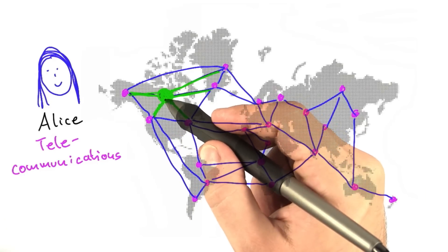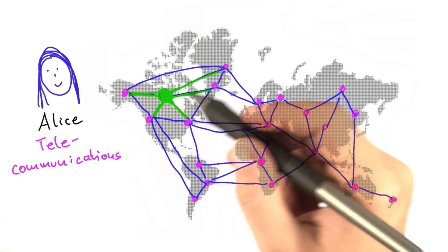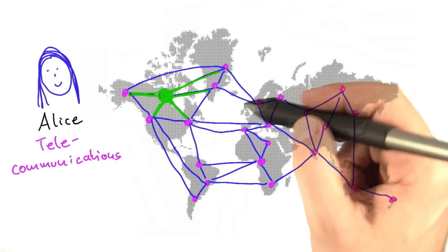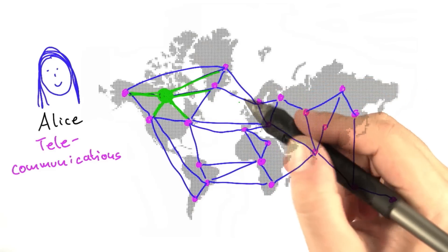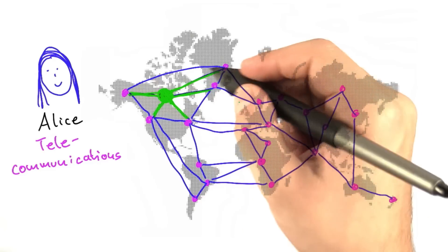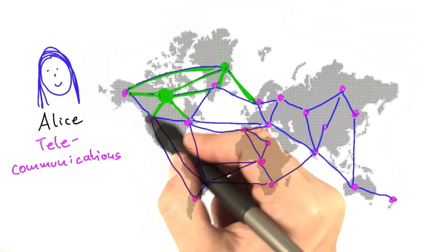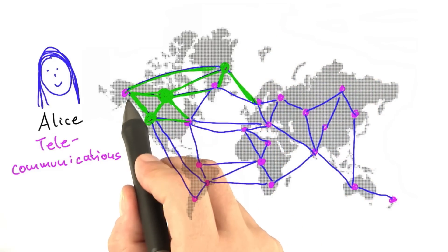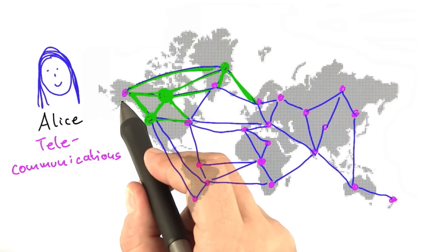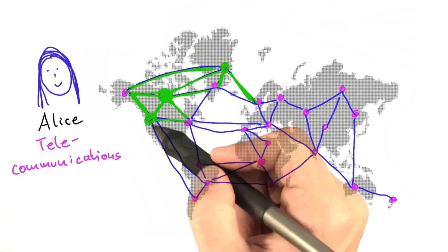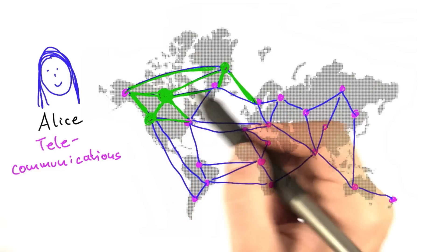In order to monitor the whole network, you would need more than one device, but you would not need to install a device at every single communication center. For example, if you install another device here which monitors these cables, and another device here, then this communication center does not need an additional device because all the cables attached to it are already monitored by the other communication centers.